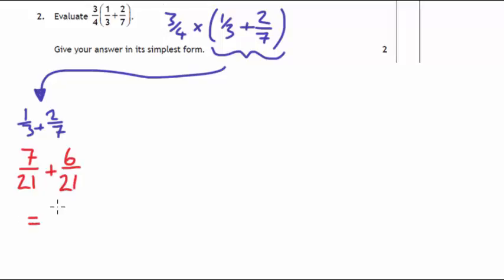Now that's going to give us, 7 plus 6 is 13, and that's over 21. So that's simplified that quite a lot.